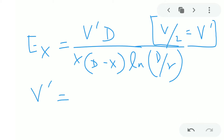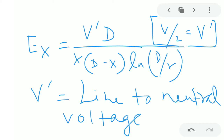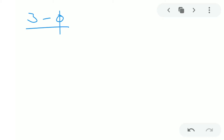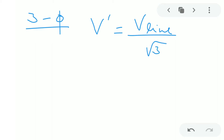So V' equals the line-to-neutral voltage in a single-phase system — half the total voltage for the forward path and half for the return path. For a three-phase system, if you carry out the same analysis, V' = V_line/√3, which is also equal to V_phase. This is the phase voltage of the three-phase system.